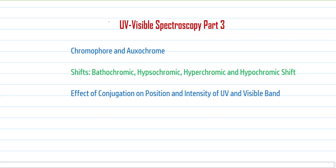Hello, welcome all of you in the third part of the ultraviolet and visible spectroscopy. In parts one and two, we went through the basic information of UV-Vis spectroscopy, including the principle and various electronic transitions. In this part, we will discuss basic terms such as chromophore and auxochrome, various shifts of the absorption band such as bathochromic, hypsochromic, hyperchromic, and hypochromic shift, and the effect of conjugation on the position and intensity of the UV-Vis band.